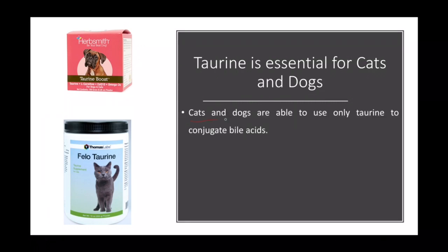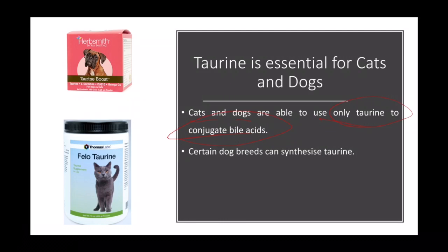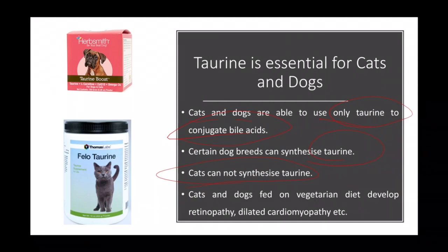Our pet animals, cats and dogs, can use only taurine for the conjugation of bile acids — similar to newborn humans. Certain dog breeds can synthesize taurine, similar to adult humans, but cats cannot synthesize taurine at all. Therefore, taurine is dietarily essential for cats.